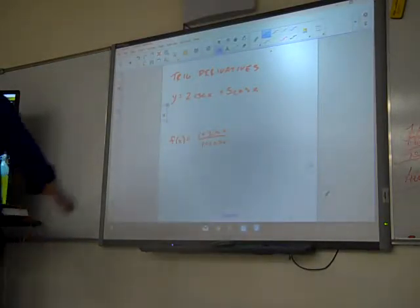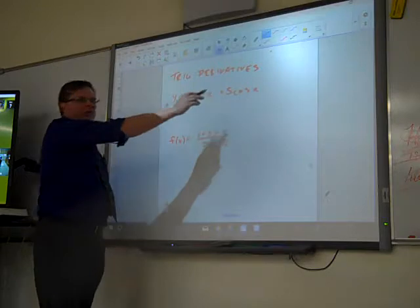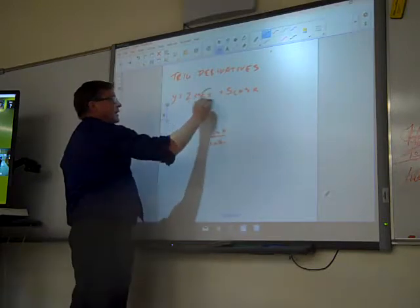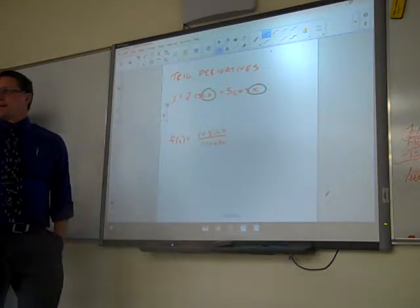Alright, trig derivatives. Y equals 2 cosecant x plus 5 cosine x. The first thing to pick up is that there's no chain rule, it's just x.